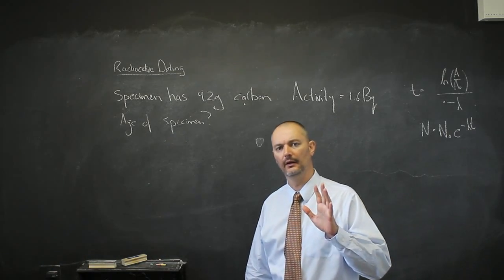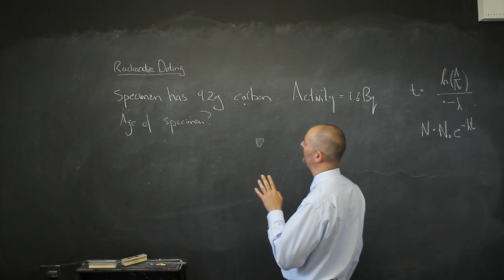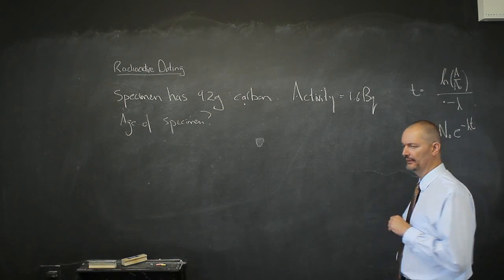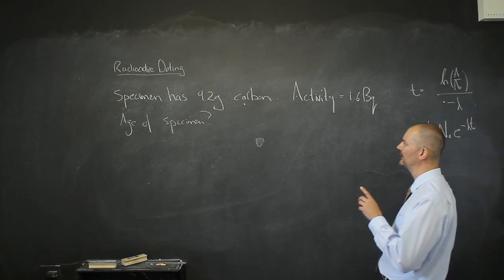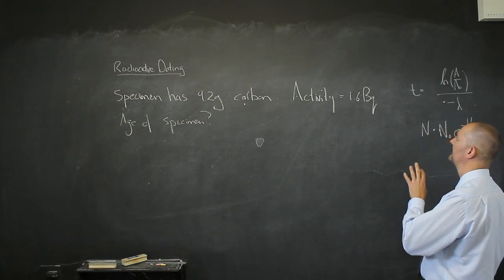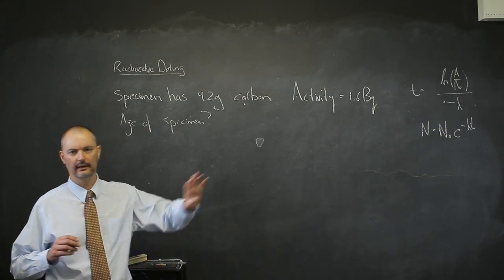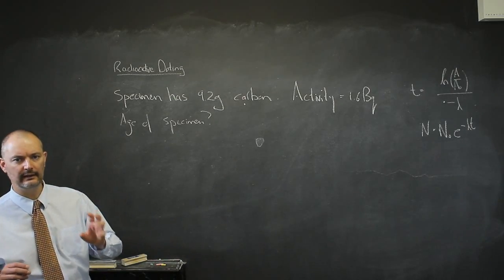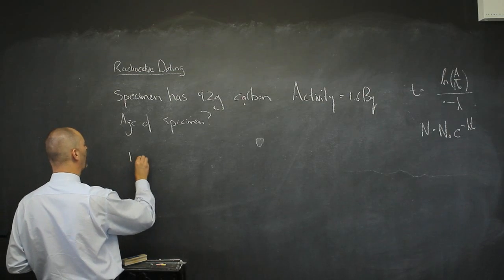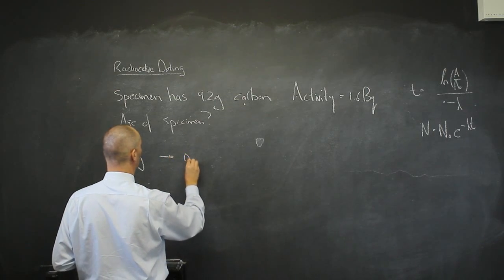This is our last problem in this section, but it's the most important. We have a specimen with 9.2 grams of carbon in total. That 9.2 grams has an activity of 1.6 becquerel. What is the age of the specimen? We'll take for granted that over the last couple thousand years, the living organism activity has been constant. Remember, this is the most important part: we estimated before that 1 gram of carbon has an activity of 0.23 becquerel.